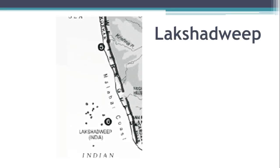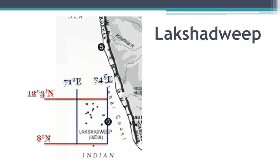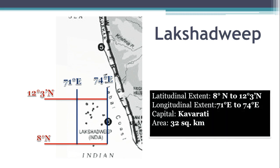Lakshadweep lies in the Arabian Sea. These islands are 300 km away from the Malabar coast. It lies between 8° N latitude to 12° 3' N latitude and 71° E longitude to 74° E longitude. Its capital is Kavaratti.